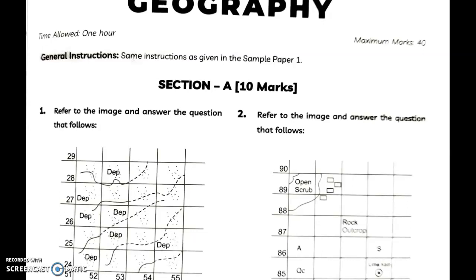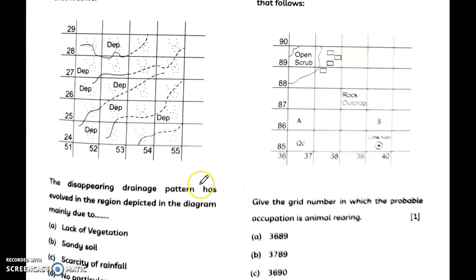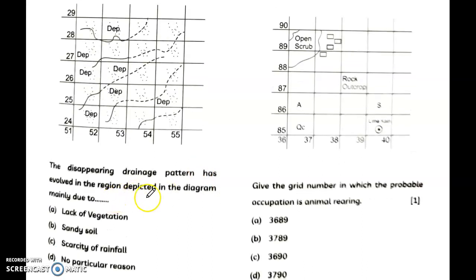Section A is of 10 marks. Refer to the image and answer the question. You have to see this image - the disappearing drainage pattern has evolved in the region depicted in the diagram mainly due to... options are there. Answer is option B, that is sandy soil.